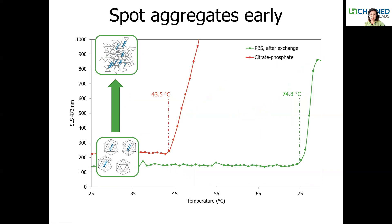In the same thermal ramp experiments, we can also observe aggregation formation using SLS. Using the acidic citrate phosphate buffer and PBS example, we can see that the acidic buffer caused aggregation at just 43.5°C — pretty early — while PBS is much more stable with a Tagg of 74.8°C. UNCO can do DLS at time zero, and in the same sample set you can also do unfolding, genome ejection, and aggregation all in one single experiment using just 9 µL. It's pretty cool.